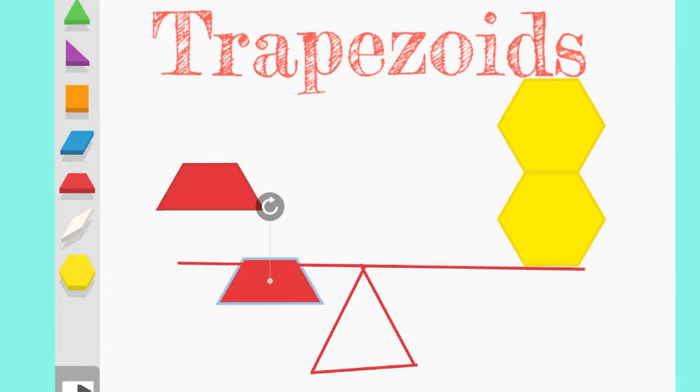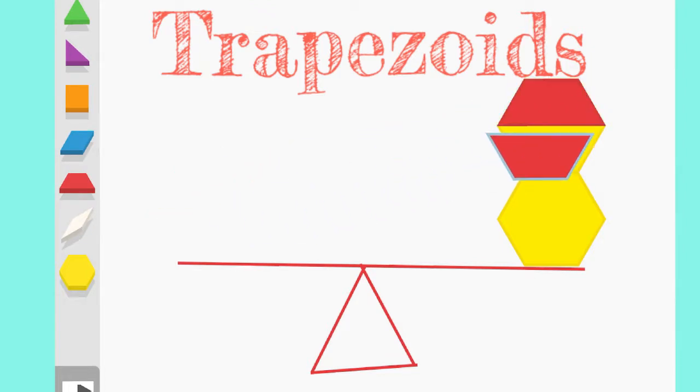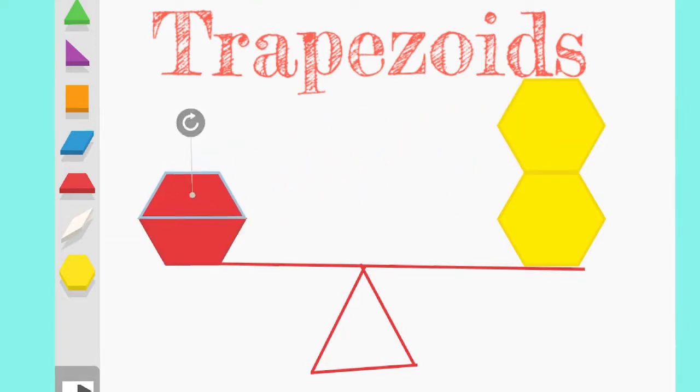First, I need to figure out how many trapezoids would fit into a hexagon. So I'm going to turn this around, okay, and I'm going to make a hexagon with my trapezoid. Oh, one, two. Two trapezoids equal one hexagon.